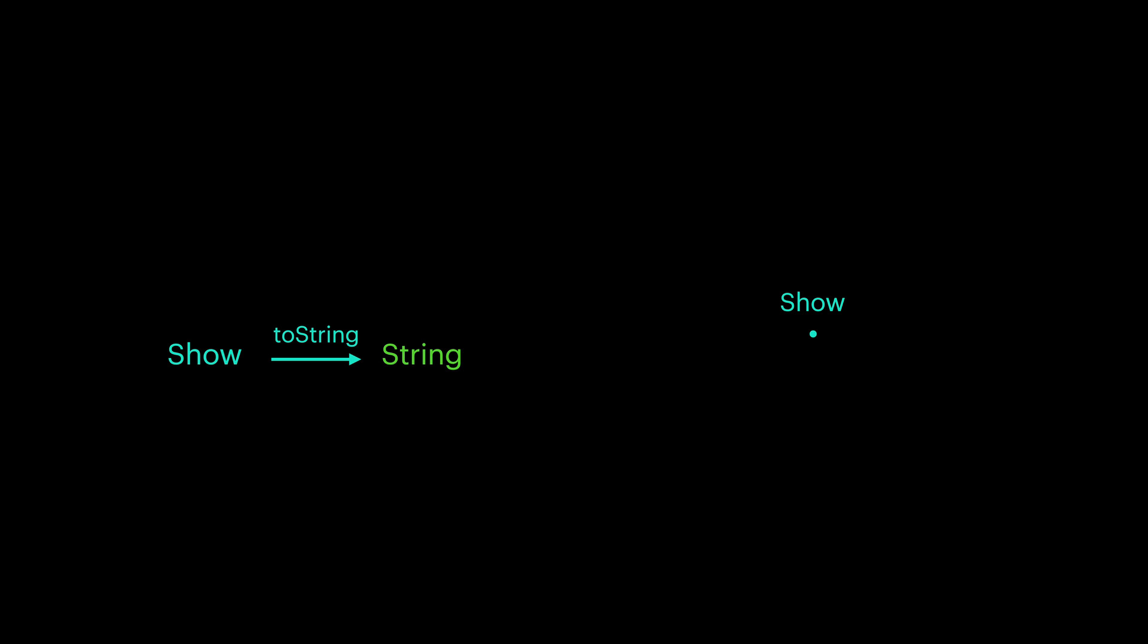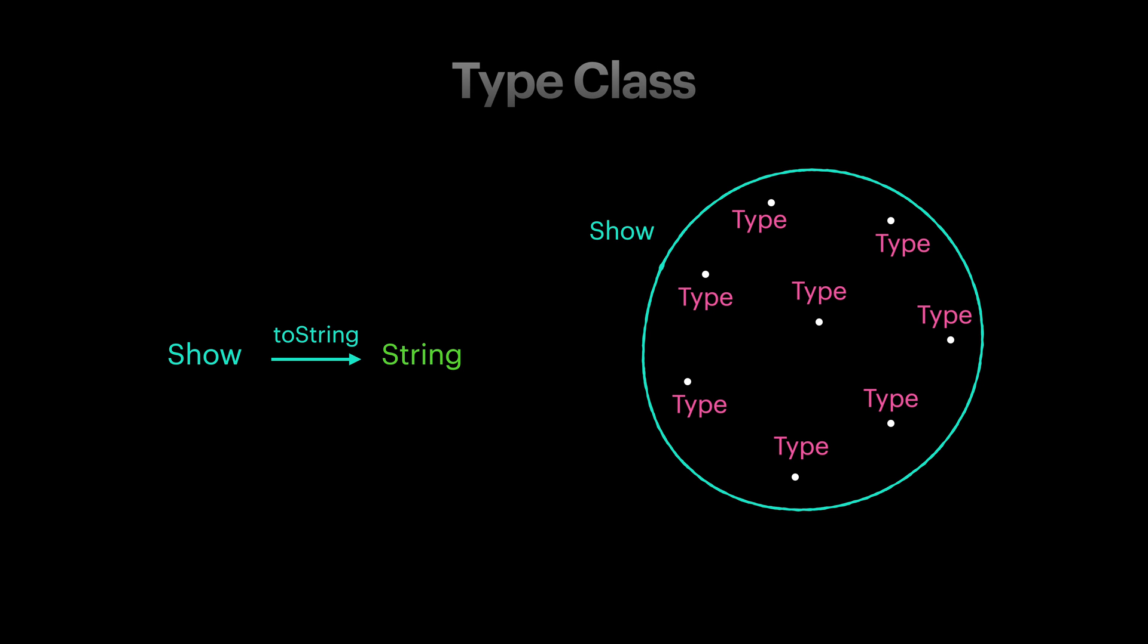Beautiful, right? Our toString function simply receives show and returns a string. The tool in functional languages that lets us group and classify types based on the behaviors they exhibit is called type class.